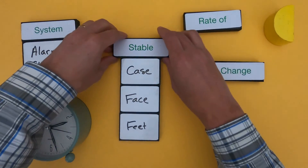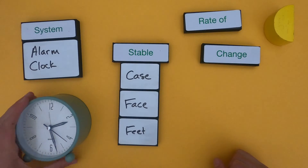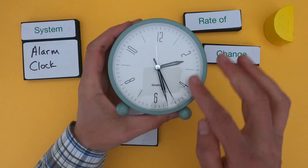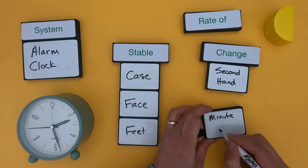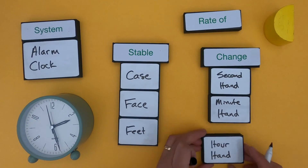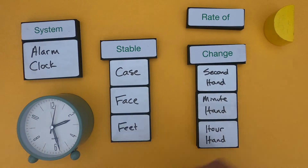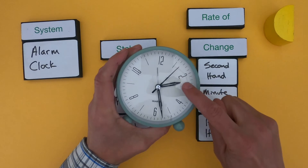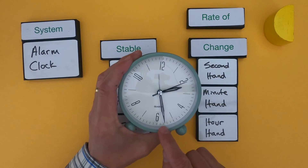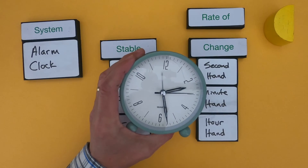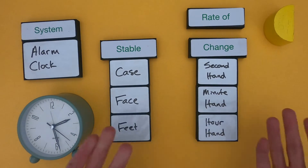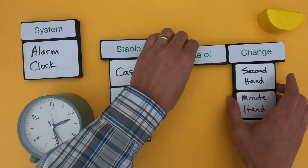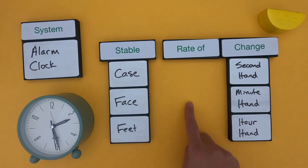Now within the system, let me figure out what are some things that are changing. The things that jump out right away are the hands of the clock. The second hand is moving around — we can see it really, really quickly. The minute hand is the longer one, and we can see it barely start to move as the second hand moves around. And then we have the hour hand. Now the last thing we should do is think about the rate of change — how fast are these things changing? It's going to be a relative rate.